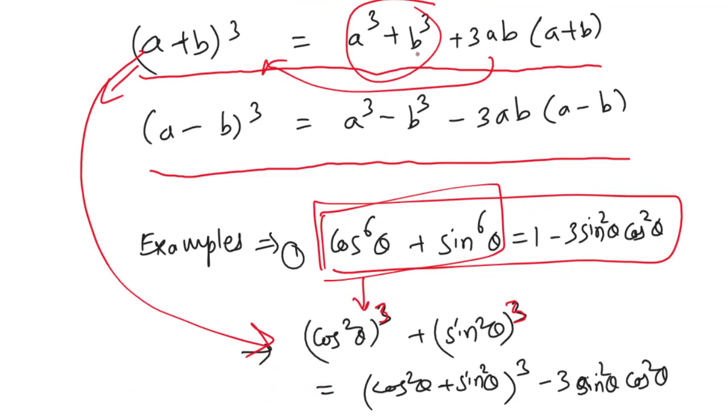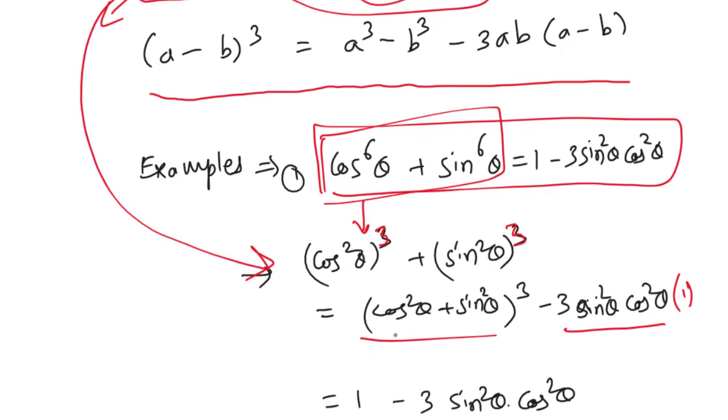Because we know a³ + b³ = (a+b)³ - 3ab(a+b), so cos²θ + sin²θ is going to be 1, and this will also be 1.